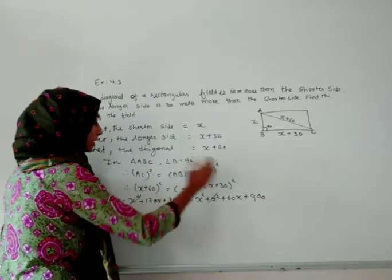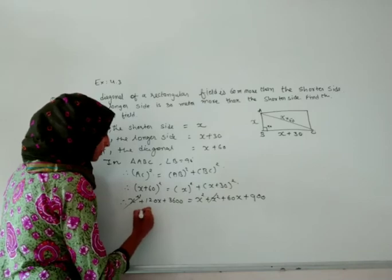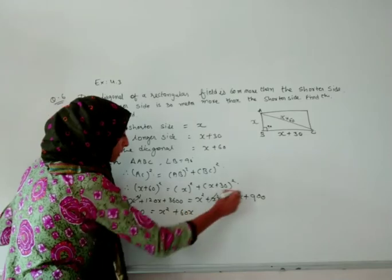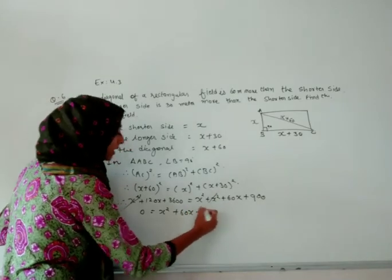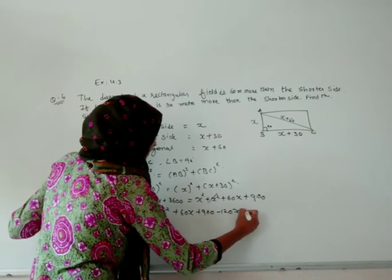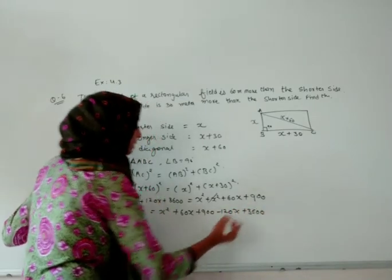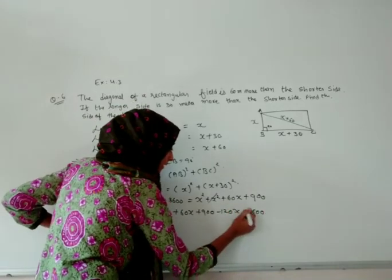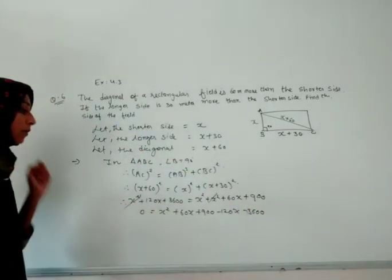We have to shift all this to that side, so it will become 0 on this side. On that side, x squared is remaining, 60x is remaining, plus 900 is remaining. All this will become 120x and 3600, and it will be minus because it is plus over here. It will become minus.